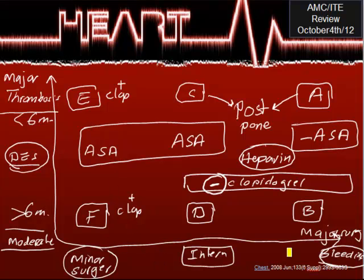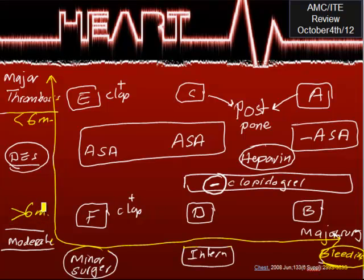Look at the curve — the x-axis represents bleeding. As you go further from the center, bleeding becomes more major; it is intermediate in the center and minor at the beginning. The y-axis represents thrombosis. High thrombosis risk corresponds to less than six months between the DES stent placement and surgery, while moderate thrombosis risk corresponds to more than six months after stent replacement.